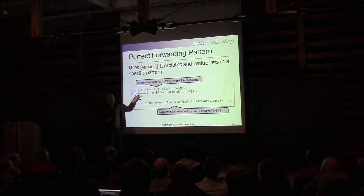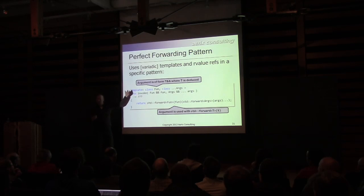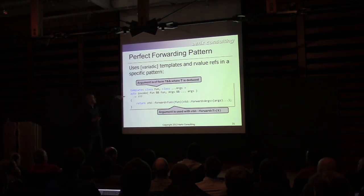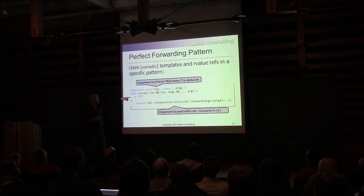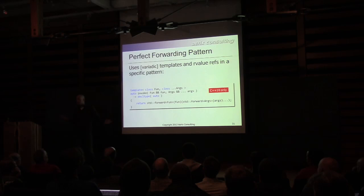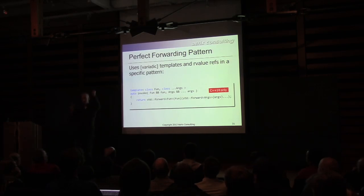Here's the perfect forwarding pattern — one place where it's okay to use r-value references aside from move constructors and move assignment operators. Just memorize this pattern and use it as-is. An interesting question: what would be the return type of an invoke function that forwards arguments to a callable? In C++11, it's decltype of the full expression. In C++14, you can say decltype(auto), or just leave it off entirely — which is even better. Progress.